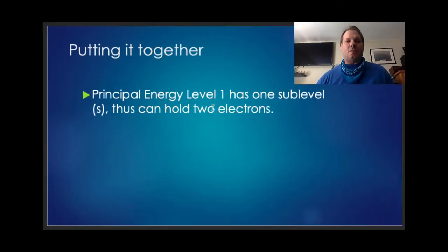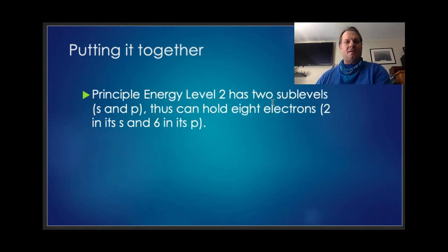So principal energy level one has one sub-level. That's the S sub-level. And it can hold two electrons. Principle energy level two has two sub-levels. An S and a P. Thus it can hold eight electrons. Two in its S, six in its P. Total of eight.